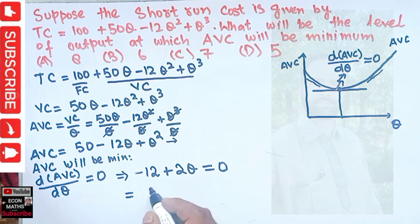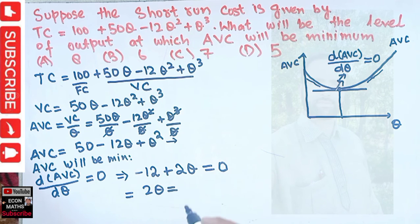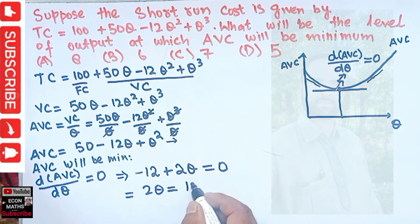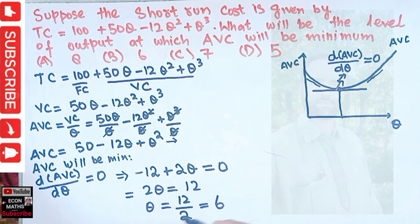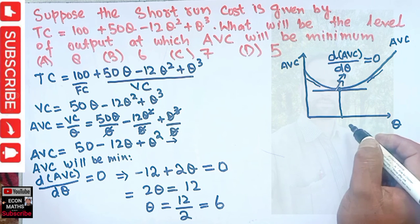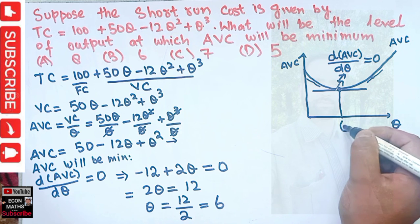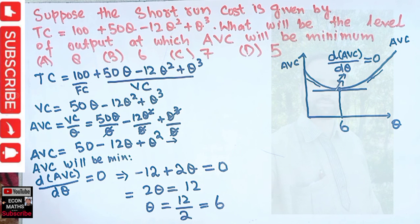Solving for q: 2q = 12, therefore q = 12/2 = 6. So the output level at which average variable cost will be minimum is 6. I hope this video was clear. Thank you.